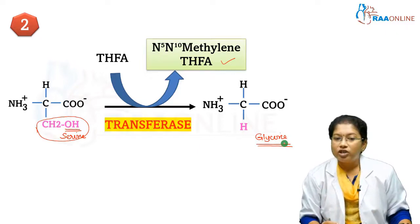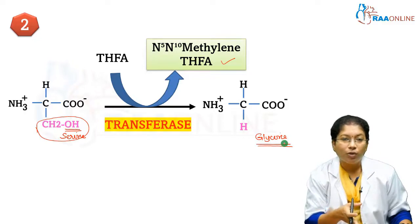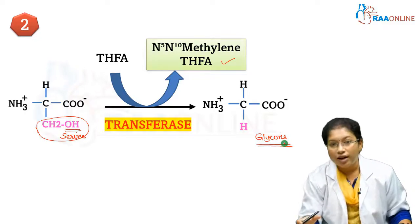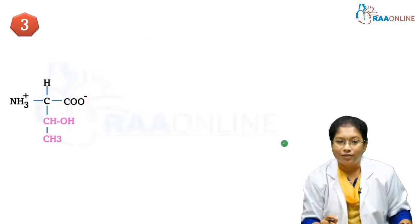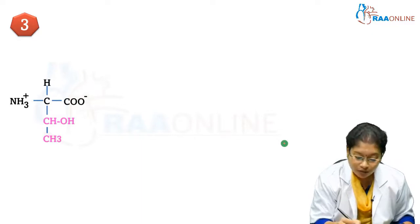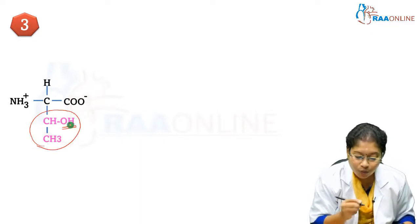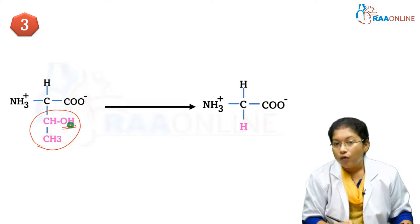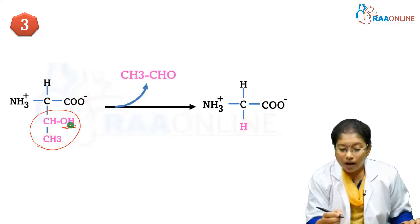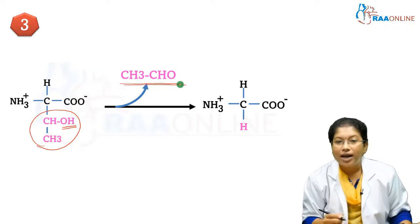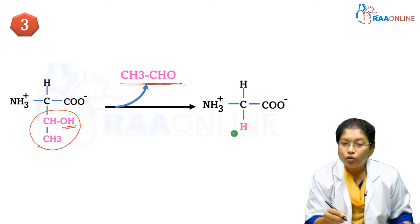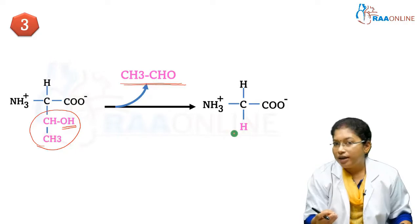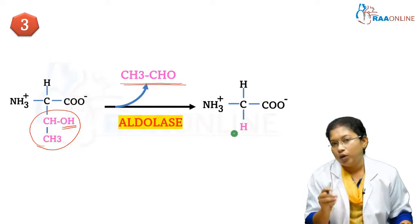The third route is how threonine produces glycine. Threonine also contains a hydroxyl group. When an acetaldehyde group is removed from threonine, glycine is obtained. The enzyme required for this reaction is aldolase.